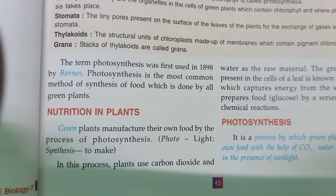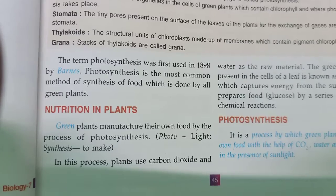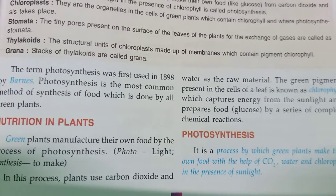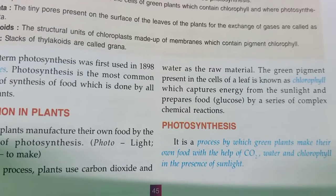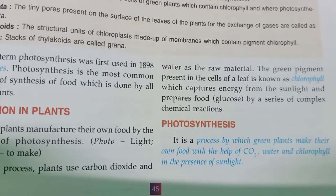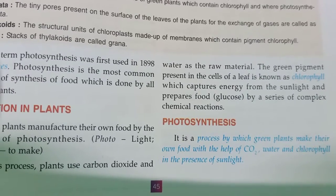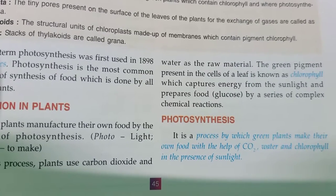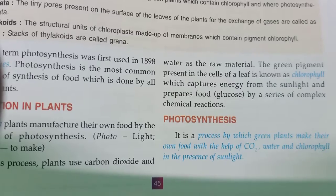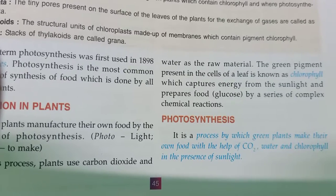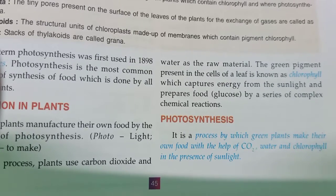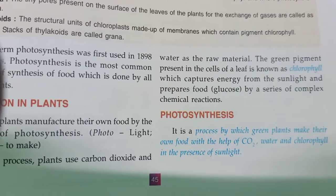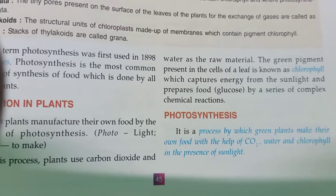In this process, plants use carbon dioxide and water as the raw materials. The green pigment present in the cells of a leaf is known as chlorophyll, which captures energy from sunlight and prepares food by a series of complex reactions.